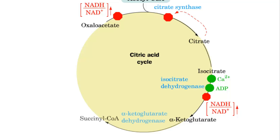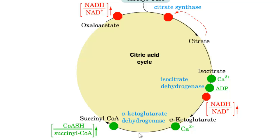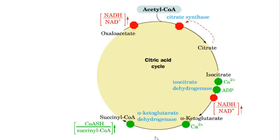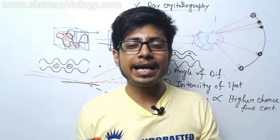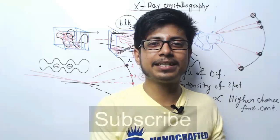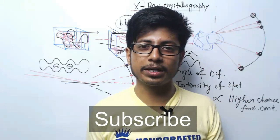Alpha-ketoglutarate is converted into succinyl-CoA by alpha-ketoglutarate dehydrogenase. This step is positively influenced by calcium ion concentration and by an increased coenzyme-A to succinyl-CoA ratio. If you like this video, please hit the like button and subscribe to the channel for more videos.